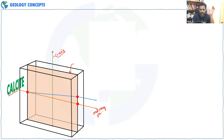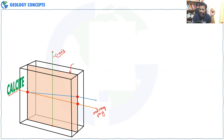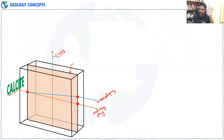The other part of the split light is the extraordinary ray. This one does not follow Snell's law — it moves at some angle. This is called the extraordinary ray.